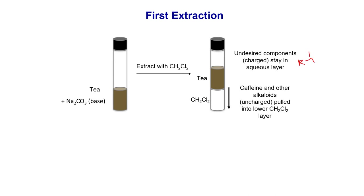The tannin salt is a charged species that stays in the aqueous layer, while caffeine and alkaloids settle at the bottom. Tannin is thus separated from the complex solution. If you don't know which layer is which, you can do a very simple test in the lab.